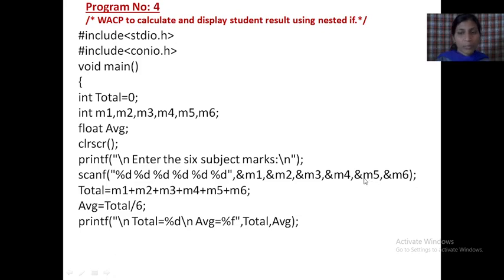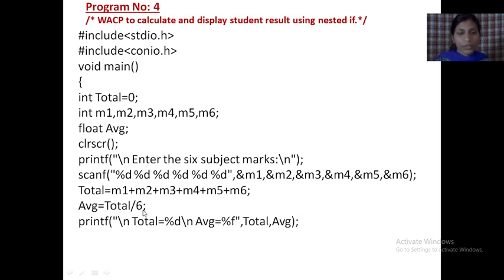Then write down the formula for total. Total means the addition of six marks: total = M1 + M2 + M3 + M4 + M5 + M6. This is the total — you will get the total value here. Then average: average = total / 6. Why divided by 6? Because we are using 6 subjects. If you are using 4 subjects, divide by 4; if 8 subjects, divide by 8. Using this formula, we will calculate the average or percentage.